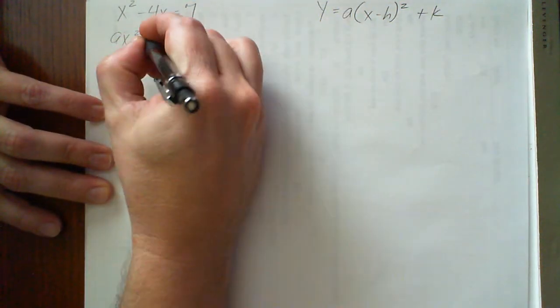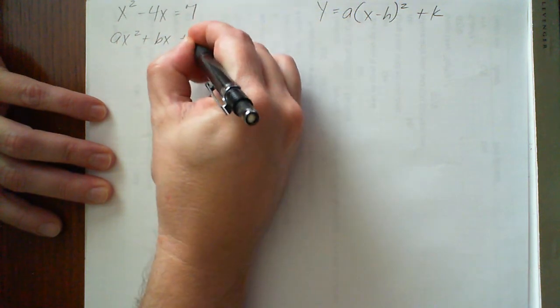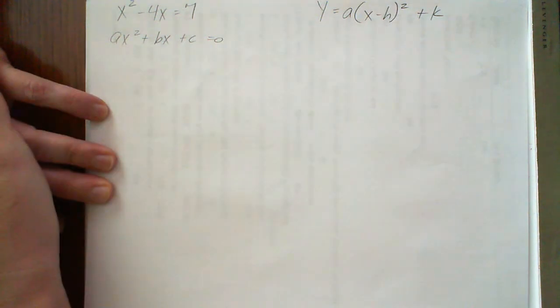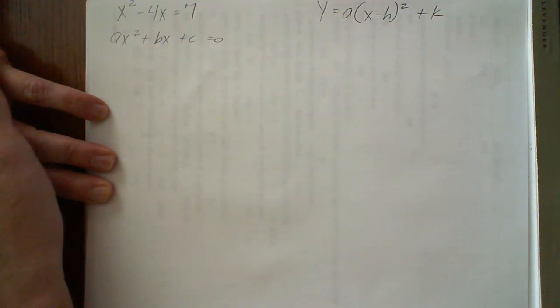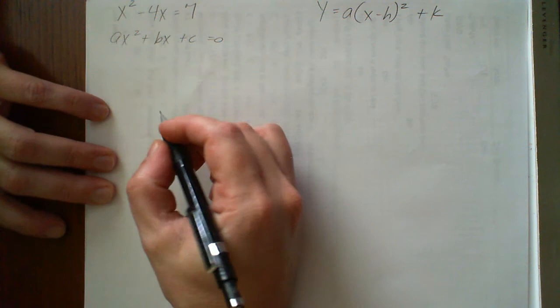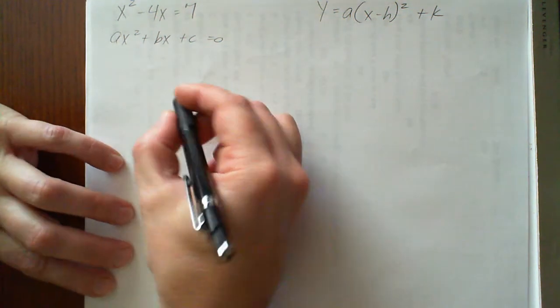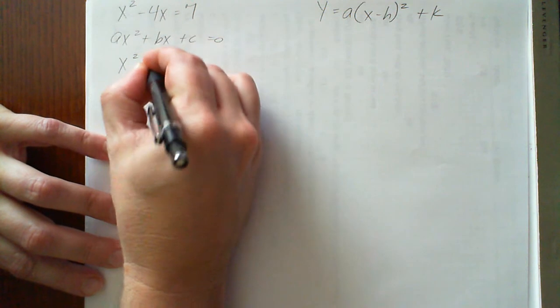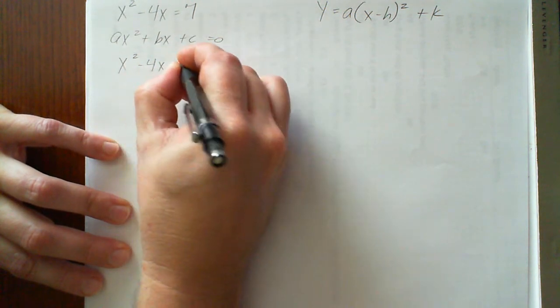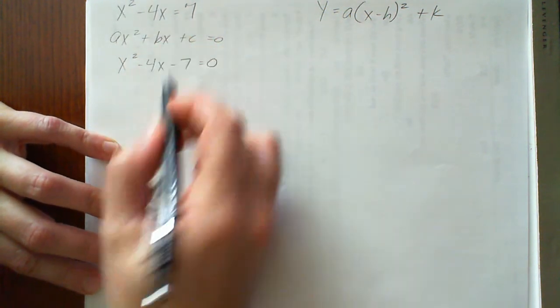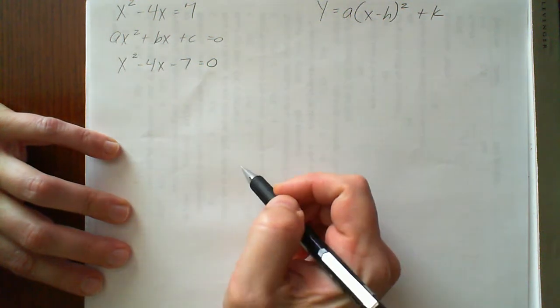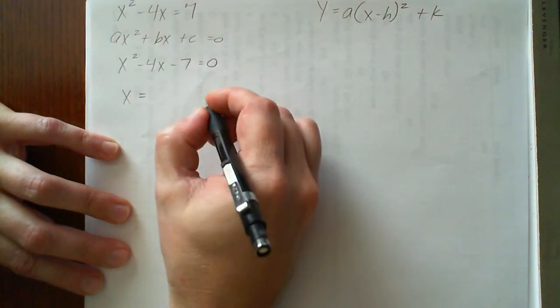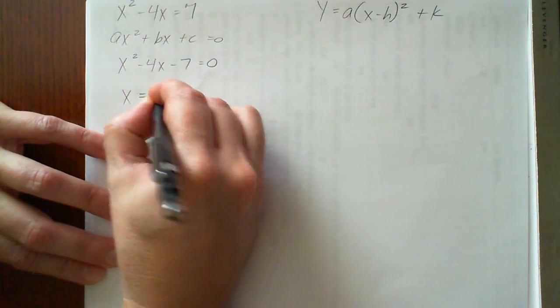We always want to get this into standard form first. Standard form looks like this, ax squared plus bx plus c equals zero or equals y. Or sometimes you'll see the function of x equals ax squared plus bx plus c. They list it several different ways. Now, to find first the axis of symmetry here. By the way, I'm just subtracting 7 from each side to get this into standard form. We have a formula to find the equation of the axis of symmetry here.